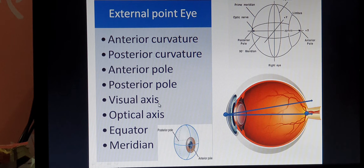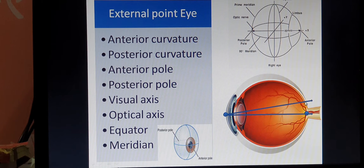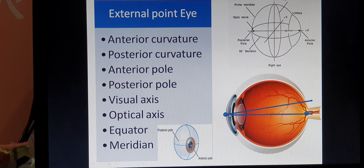The visual axis is also an imaginary line. Anteriorly it starts from the anterior pole, but posteriorly it passes through a point called the fovea centralis, where the photoreceptors are present. Image formation and accommodation of light rays takes place here. So the visual axis is an imaginary line passing from the anterior pole to the fovea centralis.